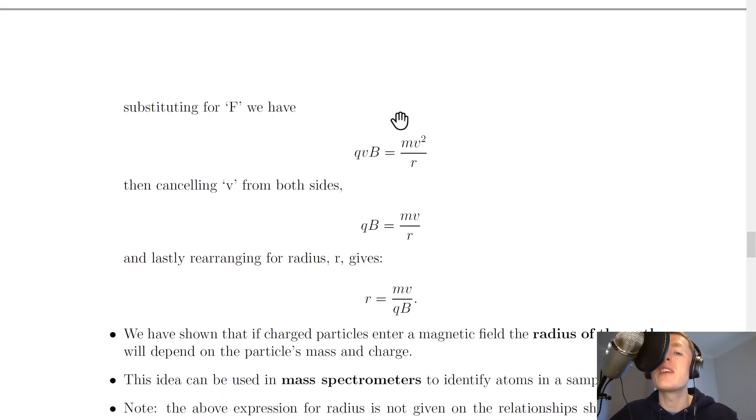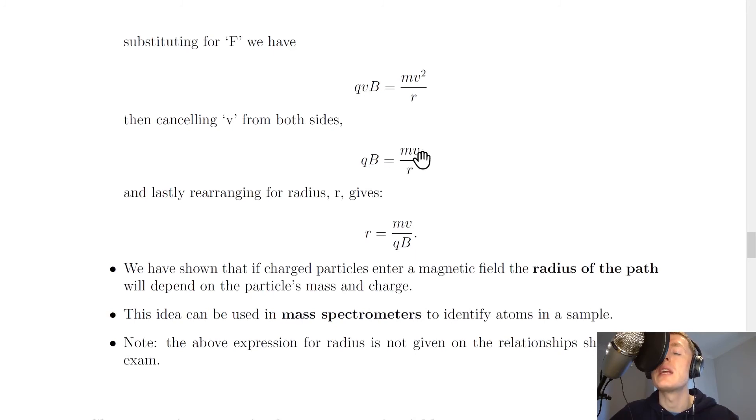Substituting for F now, we can actually just equate these two forces. Since the magnetic force is causing the centripetal acceleration and therefore the centripetal force, we can say that qvB equals mv squared over r. We can then cancel v's from both sides to end up with qB equals mv over r.